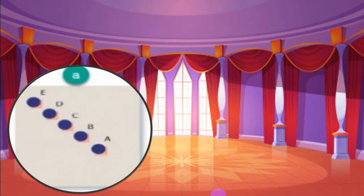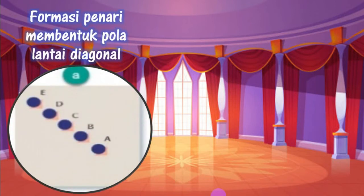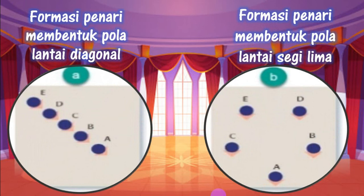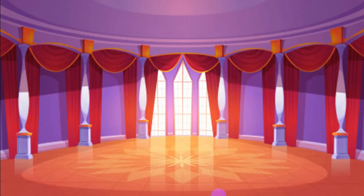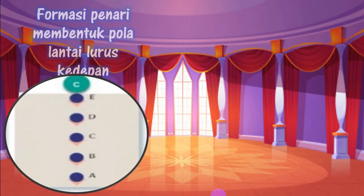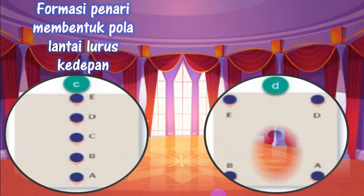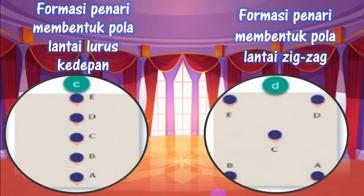Yang pertama, ada pola lantai dengan formasi penari membentuk pola lantai diagonal. Yang kedua, formasi penari membentuk pola lantai segi lima. Yang ketiga, formasi penari membentuk pola lantai lurus ke depan. Yang keempat, formasi penari membentuk pola lantai zigzag, seperti huruf Z.